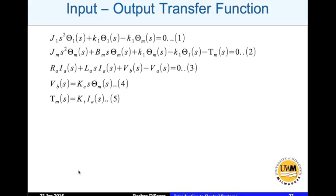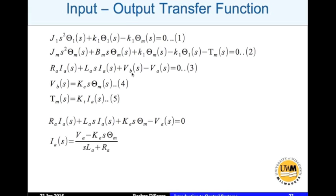To eliminate variables, we take the electrical equation and substitute for VB using coupling equation 4. This gives an expression involving I_a. We then isolate I_a from this equation and substitute it into the motor torque expression, replacing tau_m with KT times I_a.